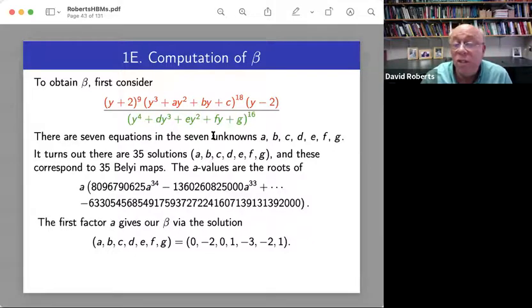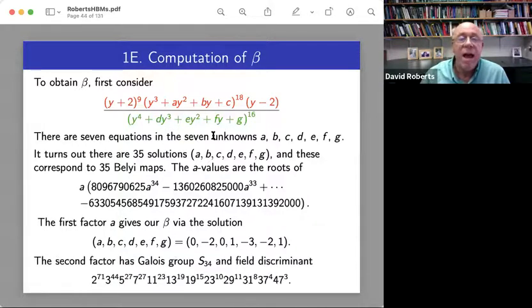But this is what we get. And now we're starting to see the specialness of this particular Belyi map. So this degree 35 polynomial factors and one of the roots is zero. And all the other ones are as tied up as they normally are.